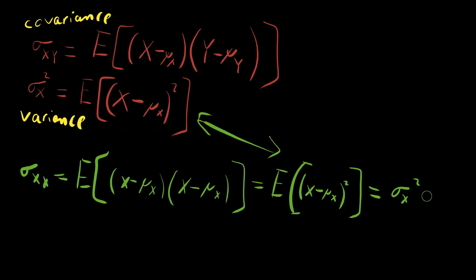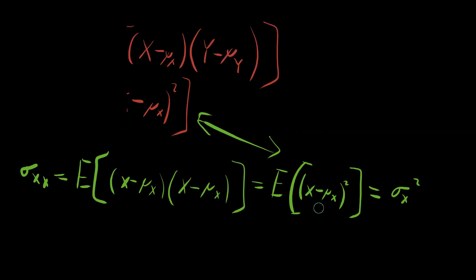That is an extremely powerful idea. It shows why variance has that squared term — because variance is a specific case of the more general idea called covariance. Now that we have these ideas together, we can take the final step and build what's called a covariance matrix, which is the matrix of all covariances.